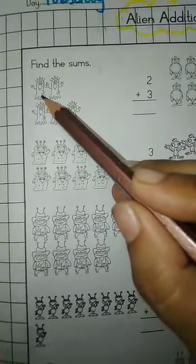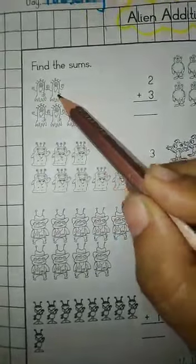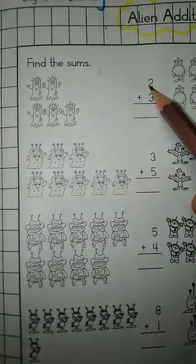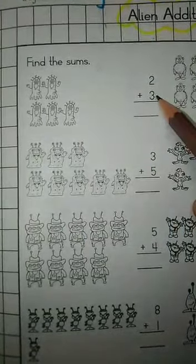How many aliens are these? One, two. Number two. Which number is this? Three.